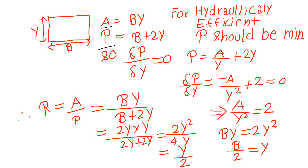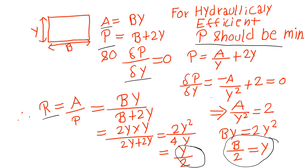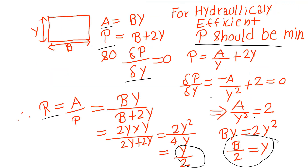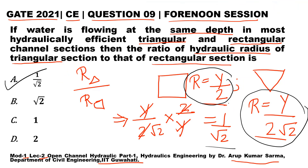For the rectangular section, take a section with width b and depth y, get the area and wetted perimeter. For hydraulic efficiency, P should be minimum — differentiate P with respect to y, solve for the standard condition, then use R = A/P to get R = y/2. Similarly for the triangular section, the apex angle is 90 degrees. Cutting the section in half gives depth y and width y on each side, so total width is 2y and wetted perimeter on one side is √2·y. Compute area and perimeter to get R = y/(2√2). Once you have both values, put them in the ratio to get the answer.